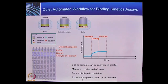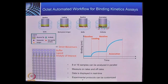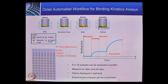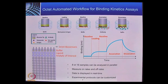Afterwards, the biosensor is moved back to buffer to establish a baseline before the real interaction. As the fourth step, the biosensor is moved into the wells containing the analytes of interest. The analyte binds to the immobilized ligand on the biosensor, generating the association curve between the analyte and the ligand. As the final step, the biosensor is moved back to buffer wells, where the analyte dissociates from the ligand, generating the dissociation curve.